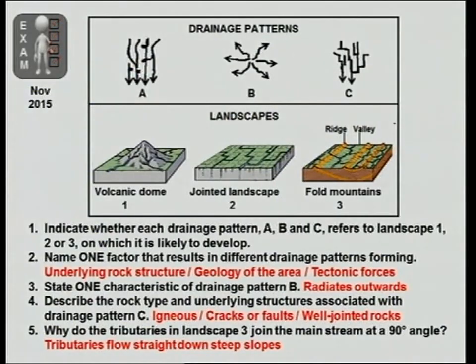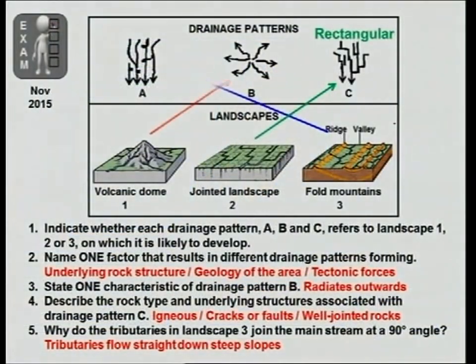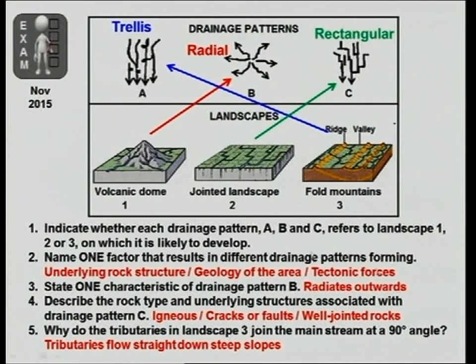Looking at the answers submitted: A with one, B with two, C with three — or A with three, B with one, C with two. Let's check the correct answers: the volcanic dome goes with B (radial); the jointed landscape goes with the rectangular pattern; and A goes with three. So the volcanic dome corresponds to B, the jointed landscape to the rectangular, and A to three.